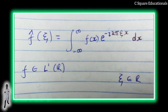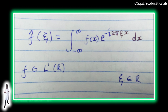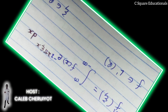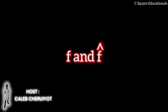Once the independent variable x represents time (denoted t), the transform variable ψ represents frequency (denoted f). For example, if time is measured in seconds, then frequency is measured in hertz. A key to interpreting the equation is that the effect of multiplying f(x) by e^(−i2πψx) is subtracting ψ from every frequency component of f(x). So the component that was at ψ ends up at zero hertz, and the integral produces its amplitude because all other components are oscillatory and integrate to zero over an infinite interval. The functions f and f̂ are often referred to as a Fourier transform pair.